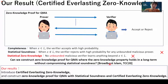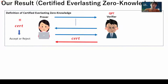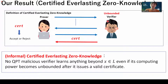I will now explain an intuitive definition of certified everlasting zero-knowledge. In a protocol with certified everlasting zero-knowledge, a malicious verifier can issue a certificate which shows that he deletes the information received from the prover. The prover can check whether the certificate is valid using her internal information. When the certificate is valid, even if the verifier's computing power becomes unbounded after that, he cannot obtain information beyond the fact that the instance X is a YES instance.